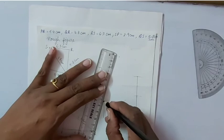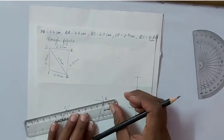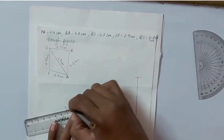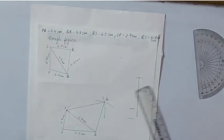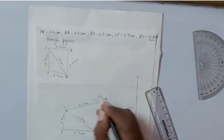Join QR and SR. Don't forget to label the sides.